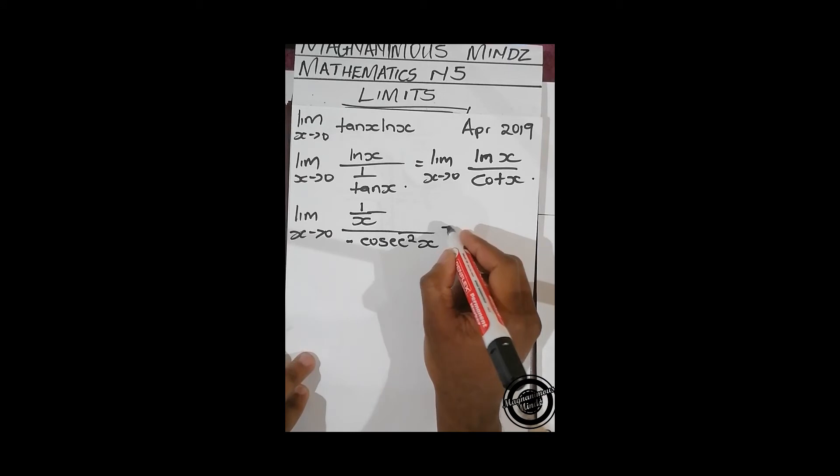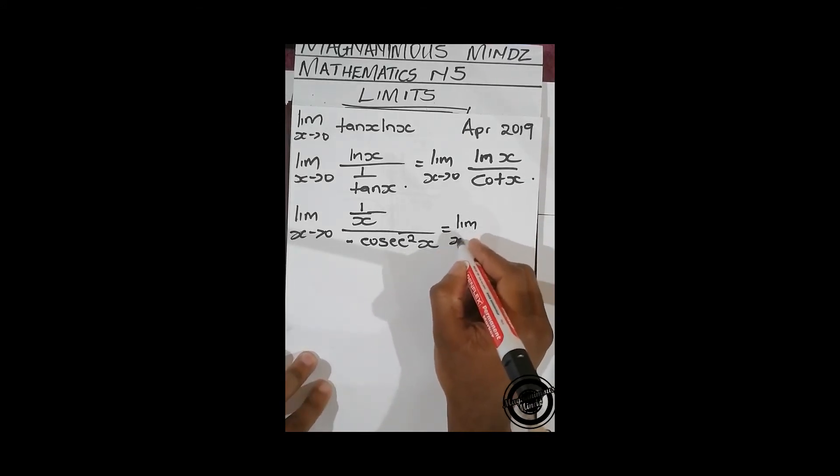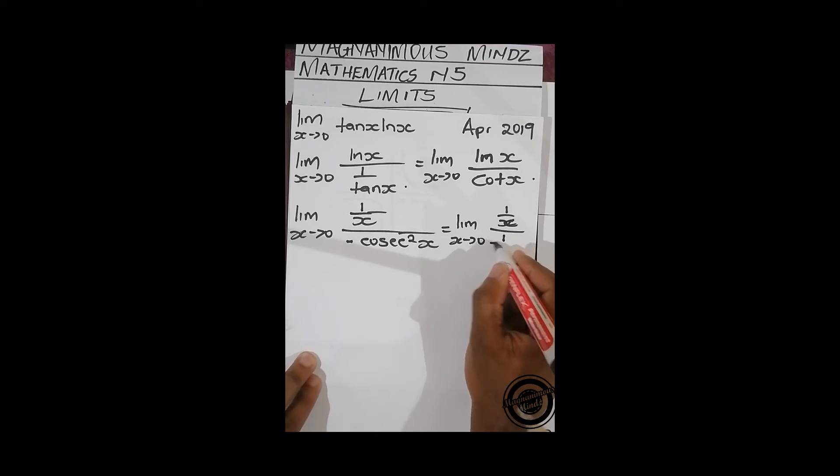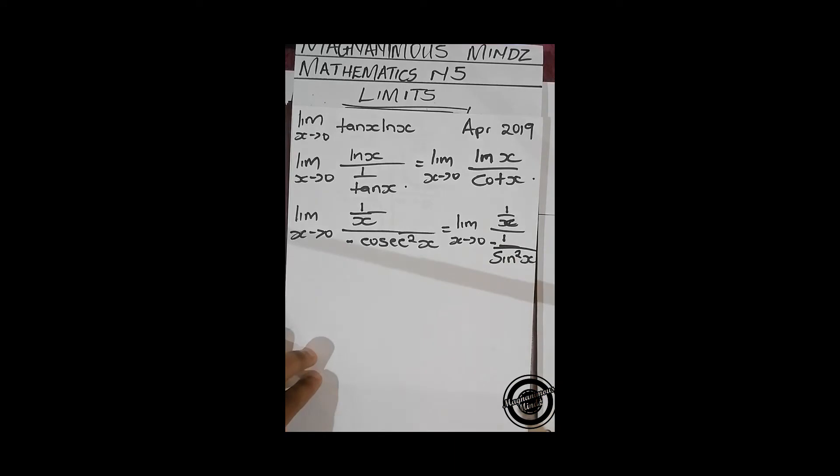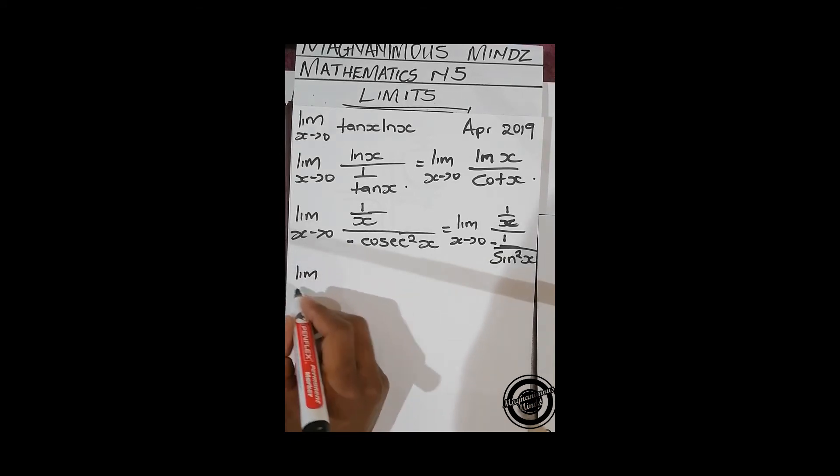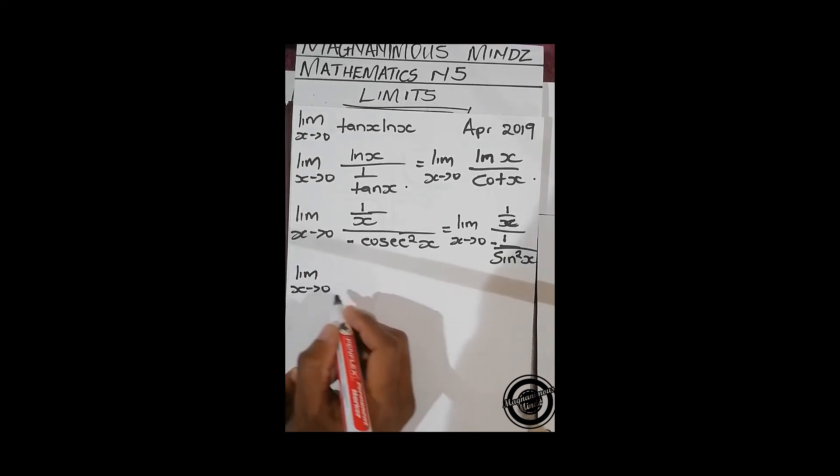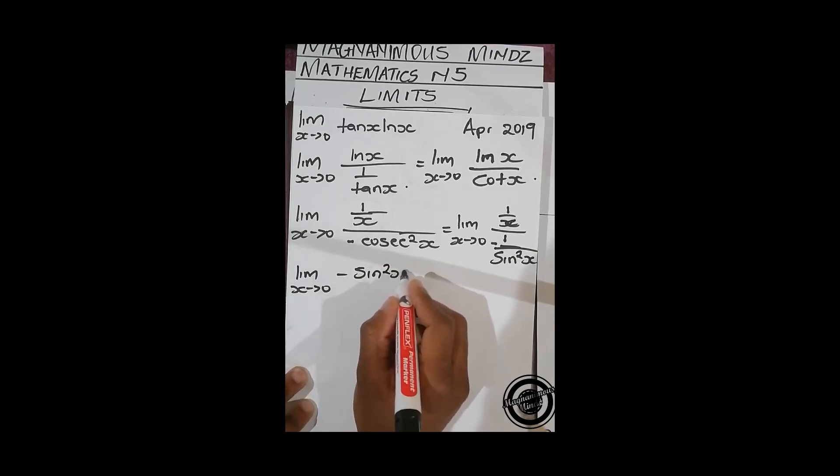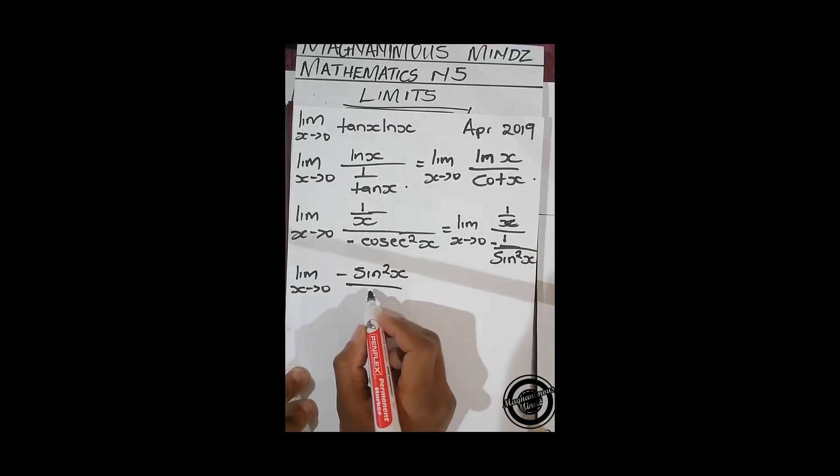And then this is the same as lim x approaching zero, 1 over x over negative 1 over sine squared x. And then we further simplify this. It gives us lim x approaching zero negative sine squared x over x.